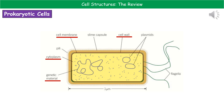In other bacterial cells there are some additional features, but these aren't present in all bacterial cells. We've got the flagella, which act like a tail; the plasmids, which are small loops of genetic material; the pili, which are tiny hair-like projections on the outermost surface; and the slime capsule, which goes around the outside of the cell wall. You need to be able to identify and label all three types of cells with those key features.